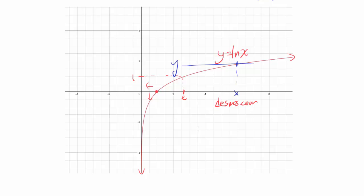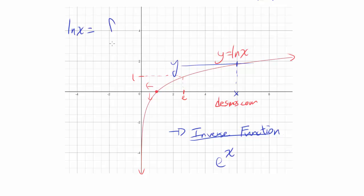Since natural log of x passes the horizontal line test, it has an inverse function. As we are about to find out in the next video, the inverse function is e to the x. That fact — that the inverse of natural log of x is e to the x — is going to show us that our integral definition, the integral from 1 to x of 1 over t, dt, is actually equal to the definition of log base e of x. We will look into that in the next video.